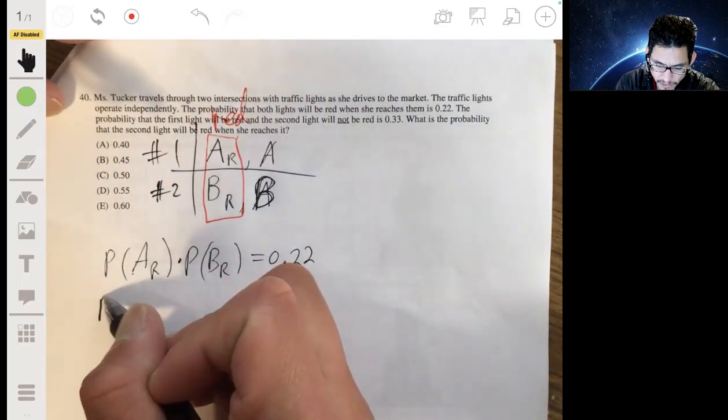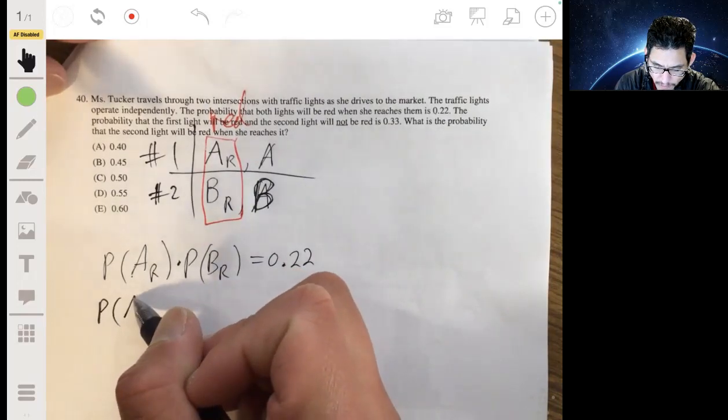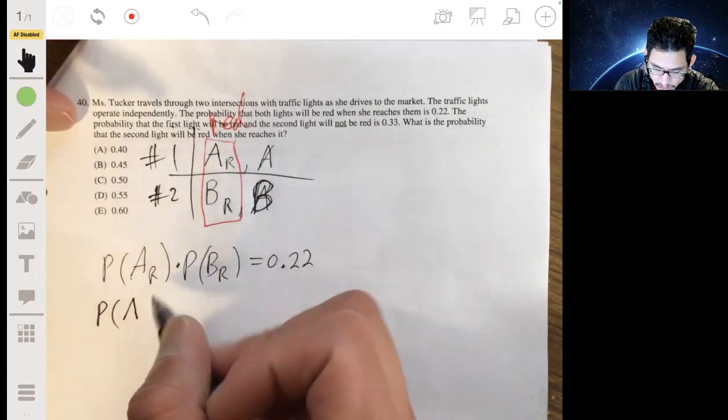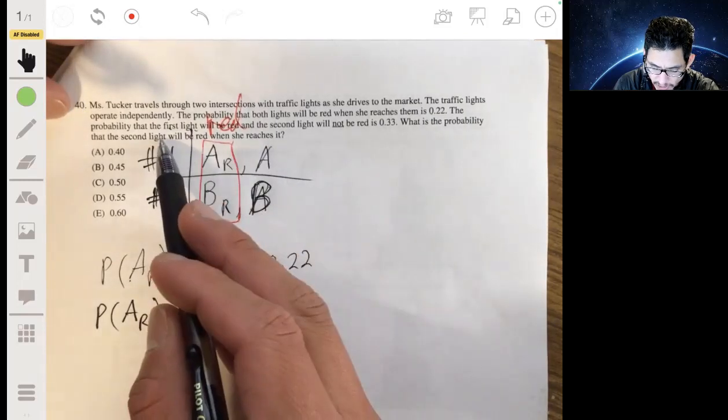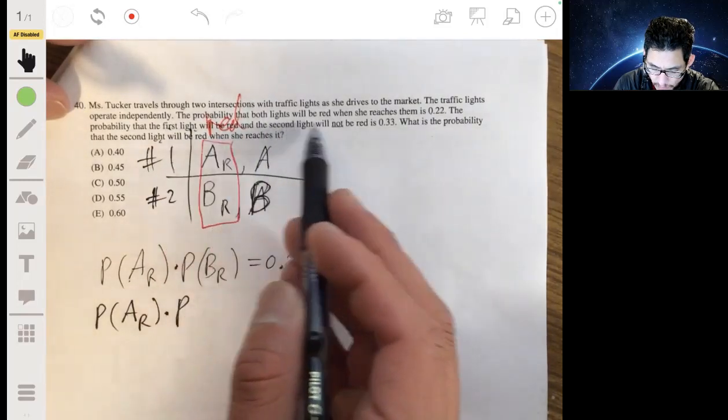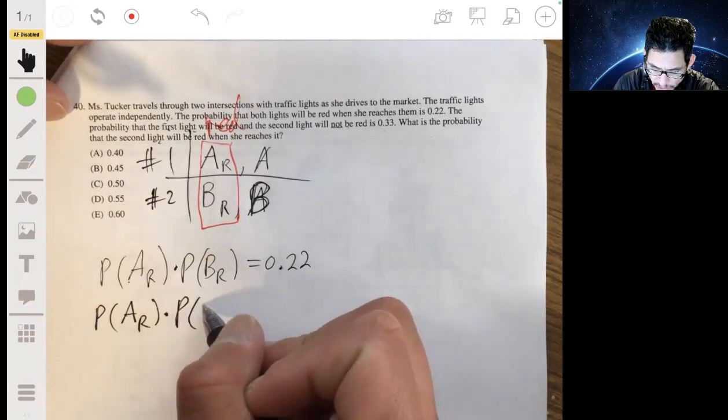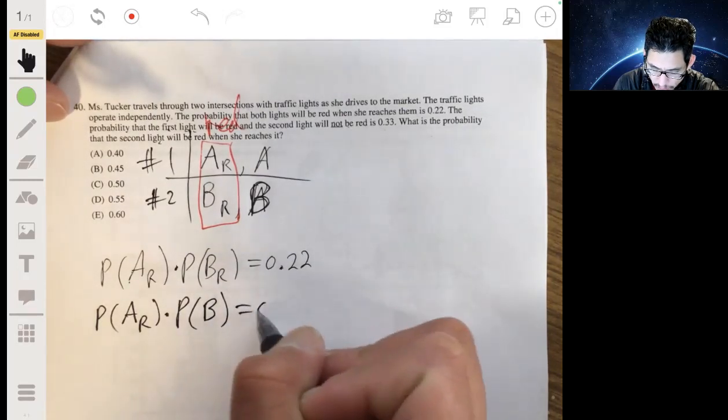And then the probability that the first light will be red and the second light will not be red is 0.33. So this will be the probability of AR, first light being red, times the probability of the second light not being red. So this probability of just B is 0.33.